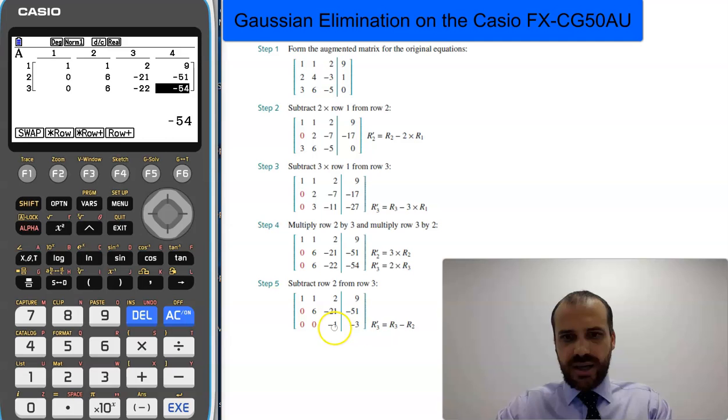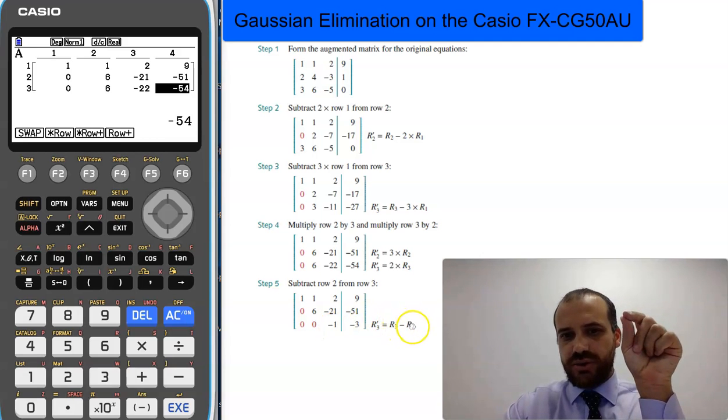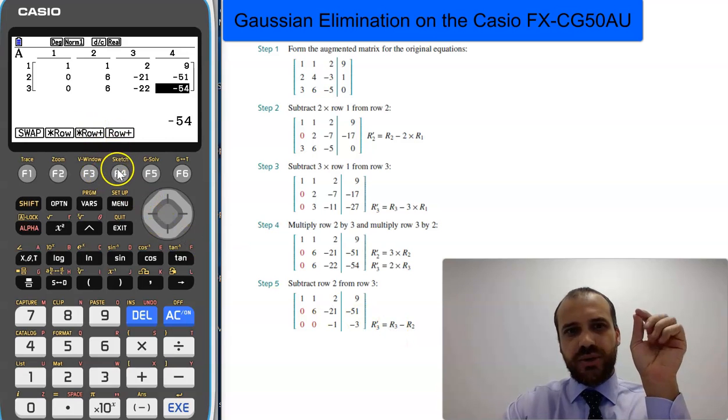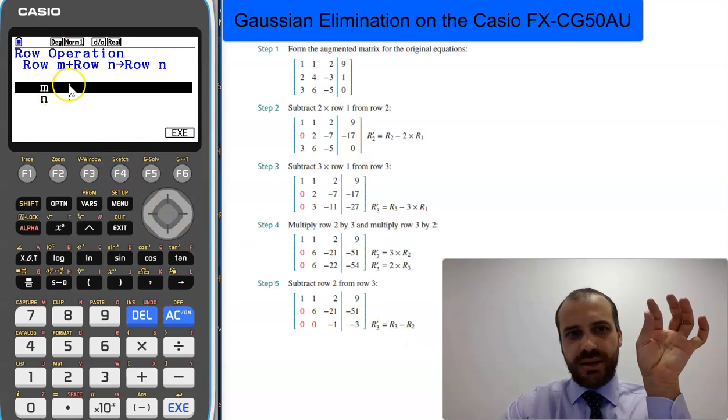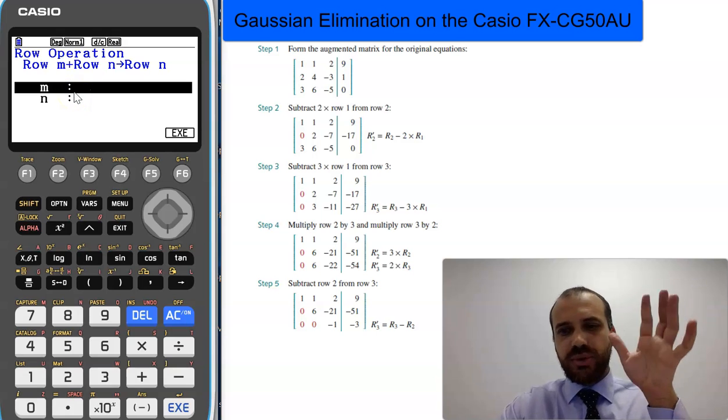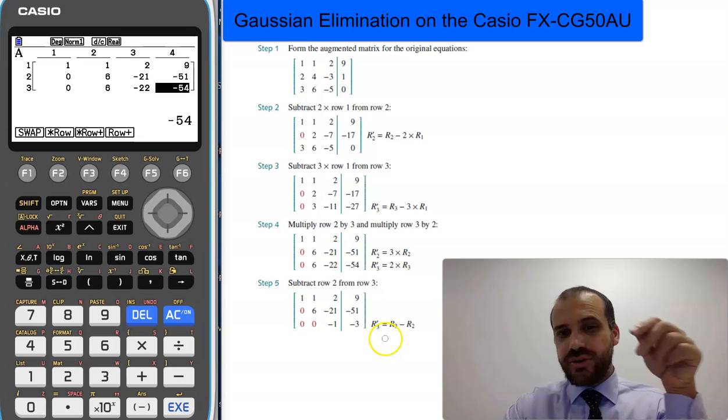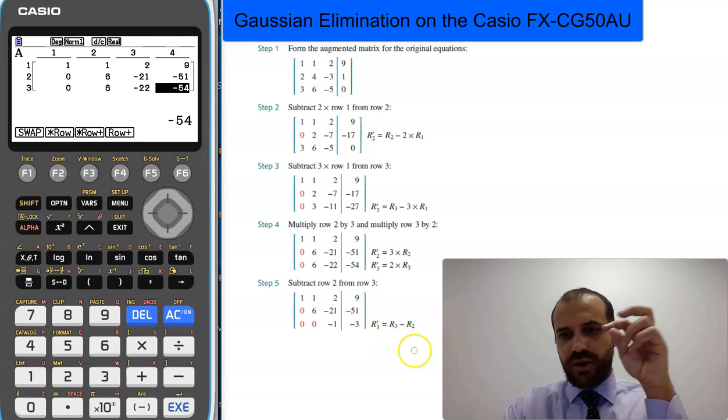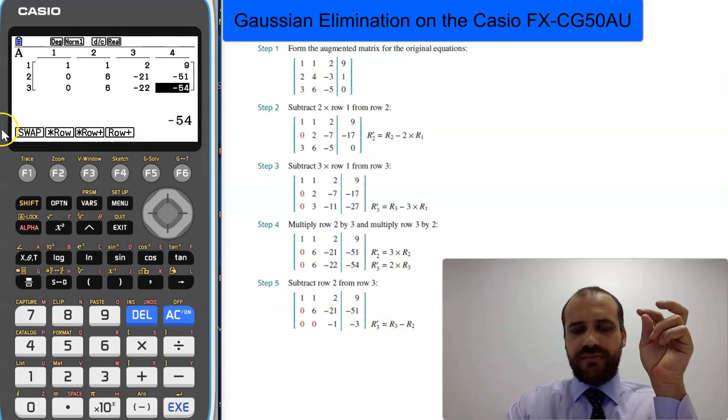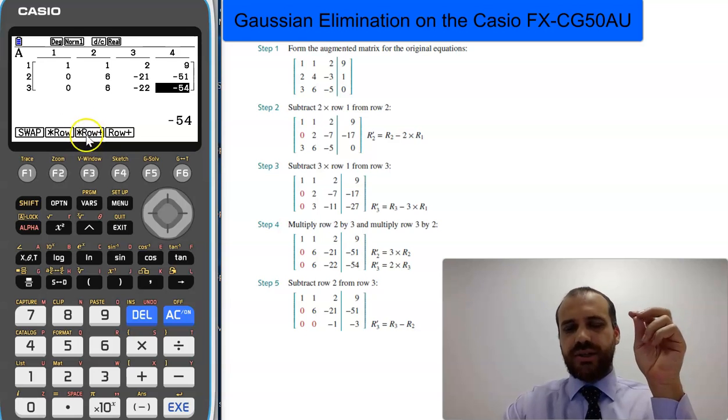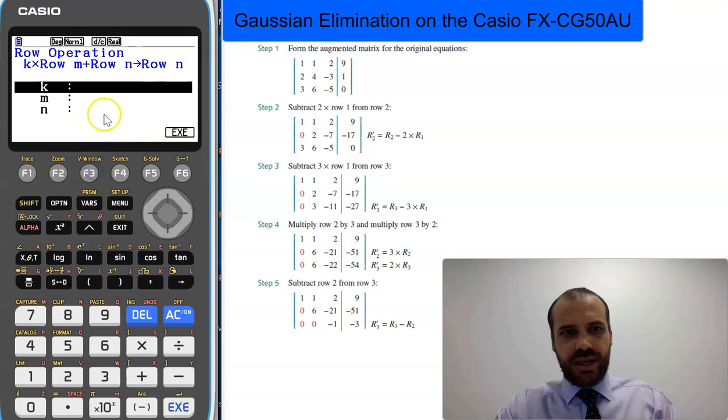Then our last step is just to subtract row 2 from row 3. We could press this one here, but we've got a small issue. The issue is that we don't want to add rows to each other, we want to subtract a row from each other. We don't have a button here for that, but we can use our little multiple one to do it.